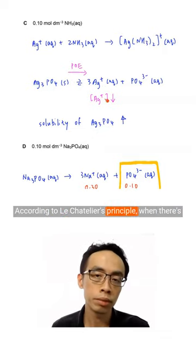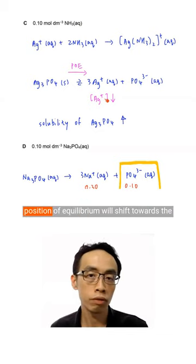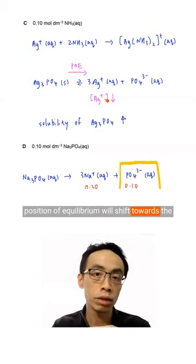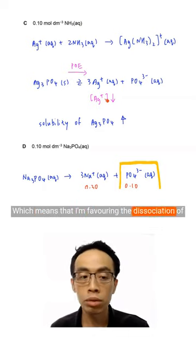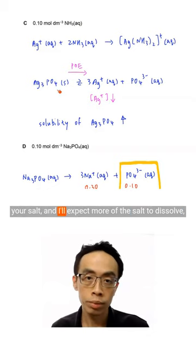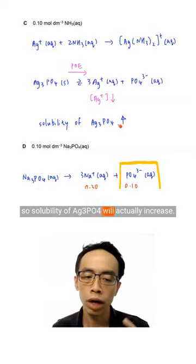According to Le Chatelier's principle, when there's a decrease in the concentration of my product, the position of equilibrium will shift towards the right-hand side, favoring the forward process, which means that I'm favoring the dissociation of your salt, and I'll expect more of the salt to dissolve, so solubility of Ag3PO4 will actually increase.